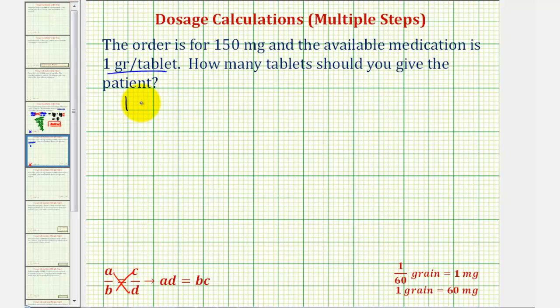So we have one grain per one tablet. Now the second rate will contain the order of 150 milligrams. So the rate will be 150 milligrams to an unknown number of tablets, so we'll say X tablets.